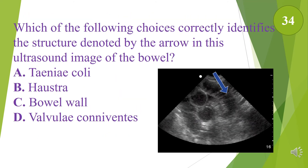Which of the following choices correctly identifies the structure denoted by the arrow in this ultrasound image of the bowel? A. Taeniae coli. B. Haustra. C. Bowel wall. D. Valvulae conniventes. The answer is D, valvulae conniventes.